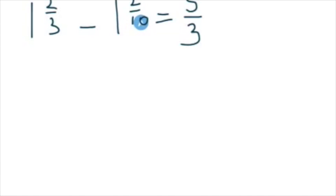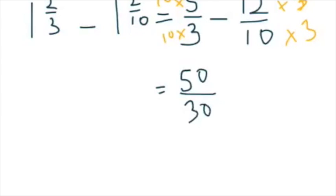1 times 10 is 10 plus 2 is 12. So 12 tenths. Now, how do we get these to have the same denominator? We're going to multiply each side by its opposite. So we multiply this side by 10. And we'll multiply this side by 3.